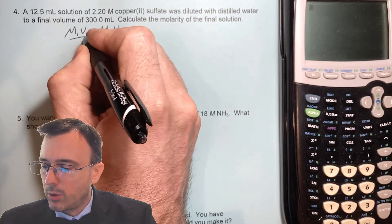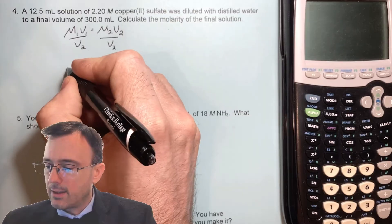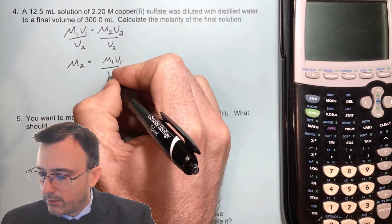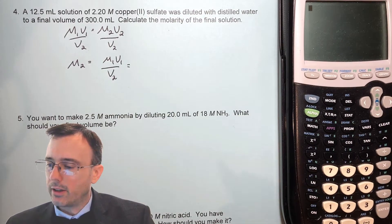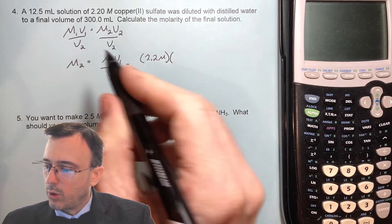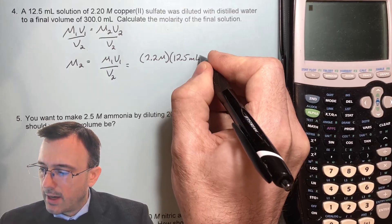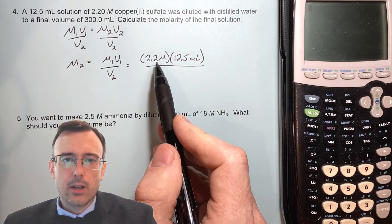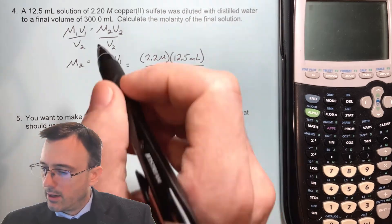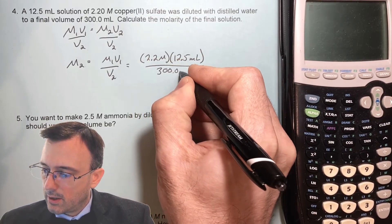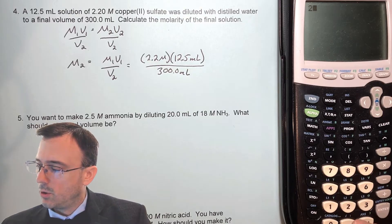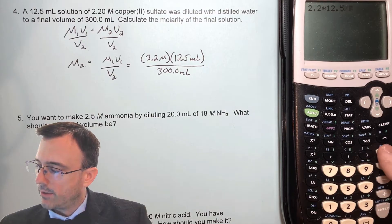We're going to divide both sides of the equation by V2 in order to solve for M2. The V2 over V2 cancels, leaving us with M2 equals M1V1 over V2. Plugging in numbers: our initial molarity was 2.2 molar, our initial volume was 12.5 milliliters, and our final volume is 300 milliliters. We can leave both volumes in milliliters because they cancel, leaving molarity as our unit. In the calculator, that's 2.2 times 12.5 divided by 300.